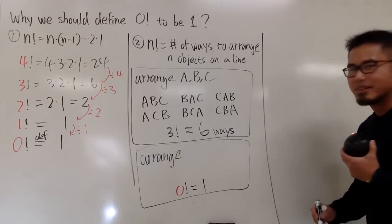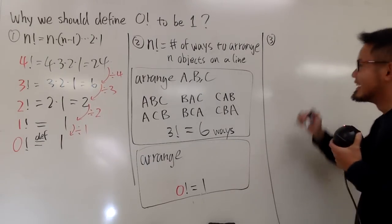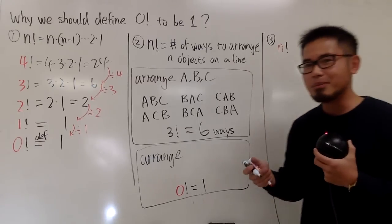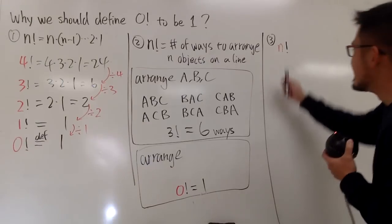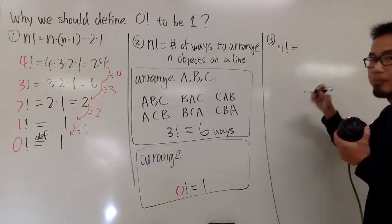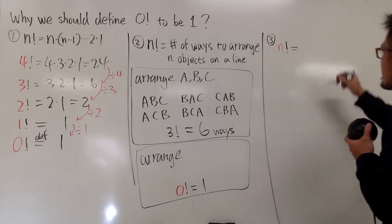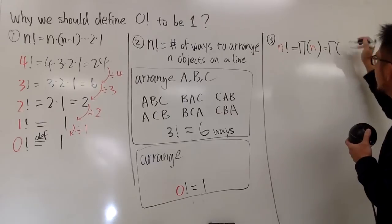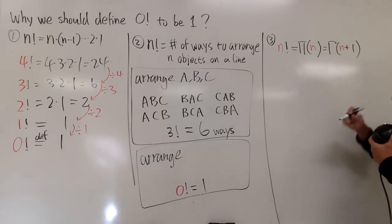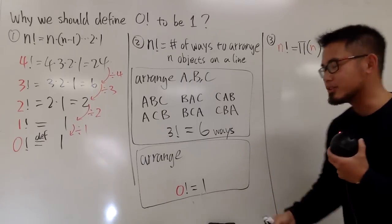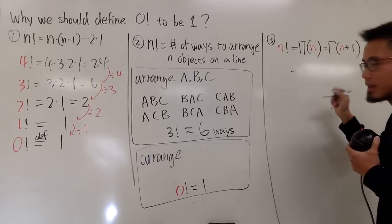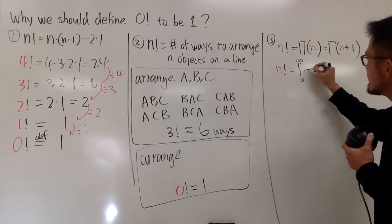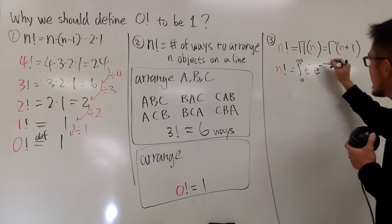Moving on to the third reason, and now we're getting more serious. n factorial, as some of you may know from my other videos, can be extended using the pi function or the gamma function. n factorial can be written as pi of n, or the gamma function with n plus 1. I'll use pi of n, which is the integral from 0 to infinity of t to the n times e to the negative t, dt.